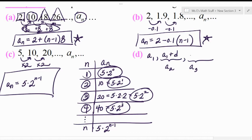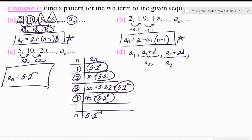And then what would a sub 3 be? Well, it would have been a sub 1 plus two common differences. And what would a sub 4 be? Oops, I'm writing this on the wrong spot. Sorry, guys. A sub 4 would be your first term plus how many common differences to get there? Yeah, three of them.